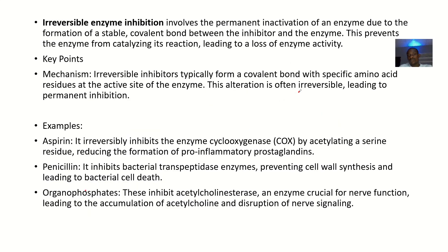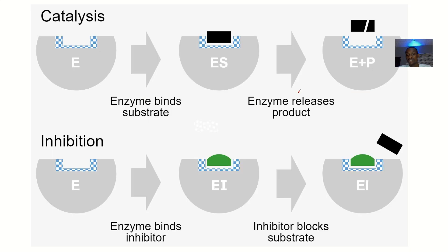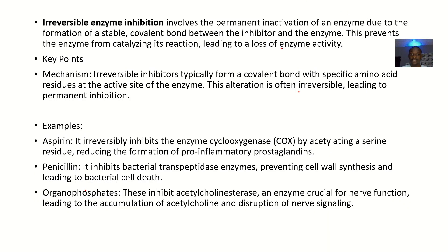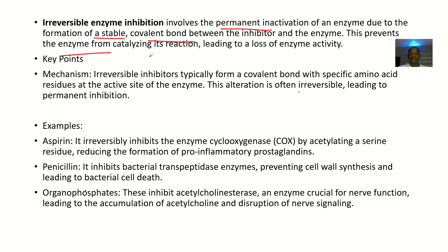For the definition: irreversible enzyme inhibition involves the permanent inactivation of an enzyme, due to the formation of a stable covalent bond between the inhibitor and the enzyme. This prevents the enzyme from catalyzing the reactions it is supposed to take part in, leading to a loss of enzyme activity.